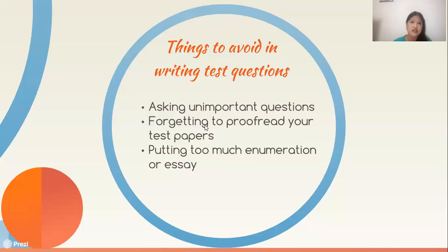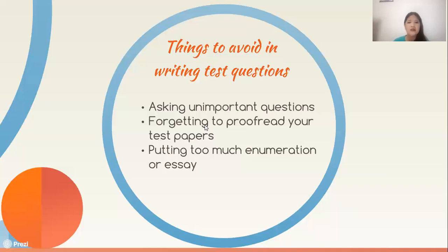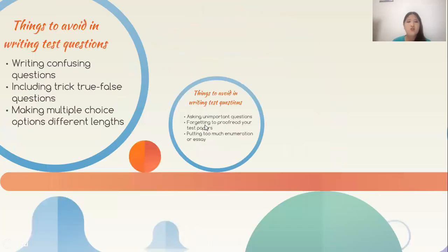Avoid putting too much enumeration or essay in your test. Some tests have 10 multiple choice items but then 30 to 40 items of enumeration. Based on books, the best type of test is multiple choice — although it's prone to guessing, with proper writing it wouldn't be. Enumeration is usually more on recall, while essay can attack critical thinking skills. You can have a variety, but it depends on the subject — just not too much enumeration.